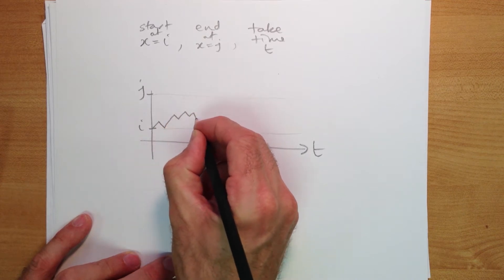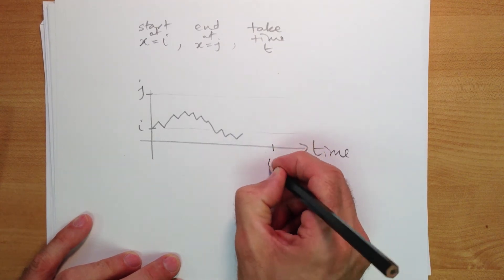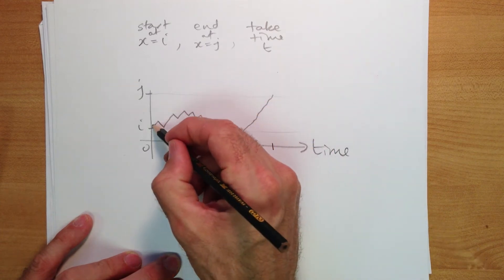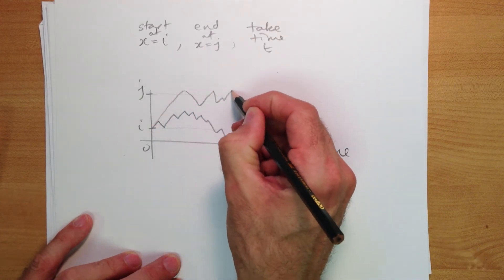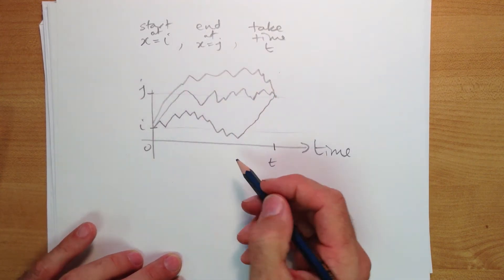I'll stylize it a little bit. They're going to wander around, and this is time, I should say. This is t, this is 0. Eventually they have to end up here, so that one would have to do something like this.